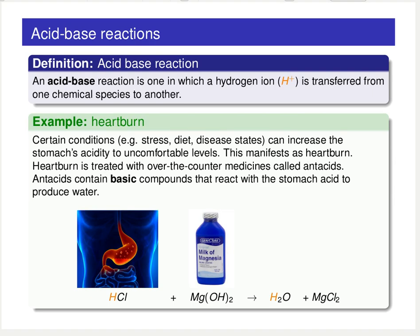Under certain conditions, this stomach acid can actually start causing us problems. Heartburn is a situation where stomach acid goes up from the stomach into the esophagus, and your esophagus does not have a thick enough mucus membrane to protect itself from that acid, so you can feel sometimes rather extreme pain. The go-to over-the-counter remedy is to take an antacid — in this case magnesium hydroxide, or milk of magnesia — which reacts with that HCl. The hydrogen on HCl preferentially jumps onto the OH⁻ from the magnesium hydroxide, forming harmless water and magnesium chloride salt.